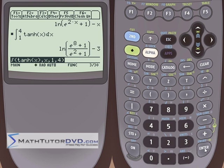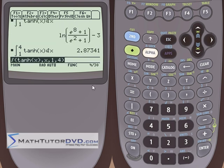If we want a number, we'll hit squiggly equals, let it think for a second, and it'll convert this guy back to a decimal, which is 2.87341.